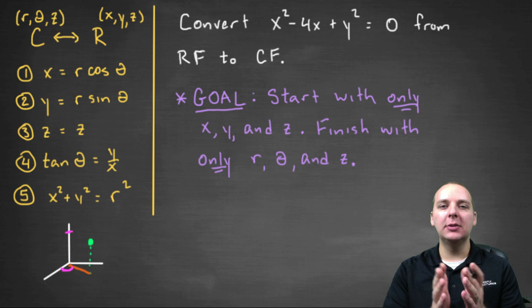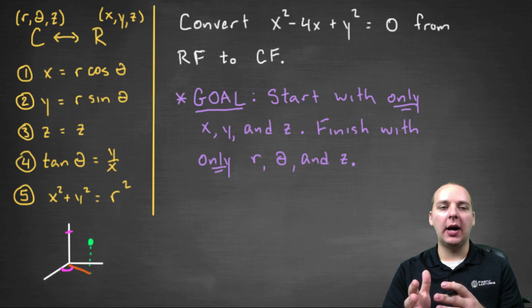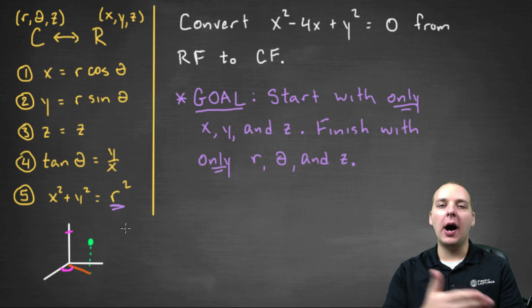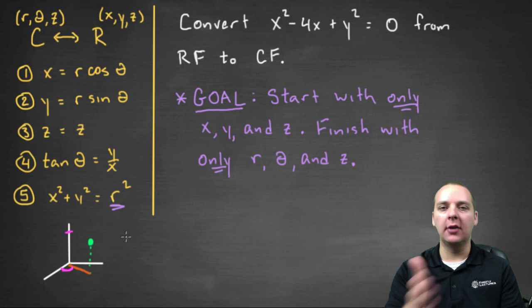Probably the biggest mistake I see with my students is they'll partially do the conversion. They might get rid of an x squared plus y squared and call it r squared, and that's great, but they might forget a y in the equation and not convert that. You have to convert everything.